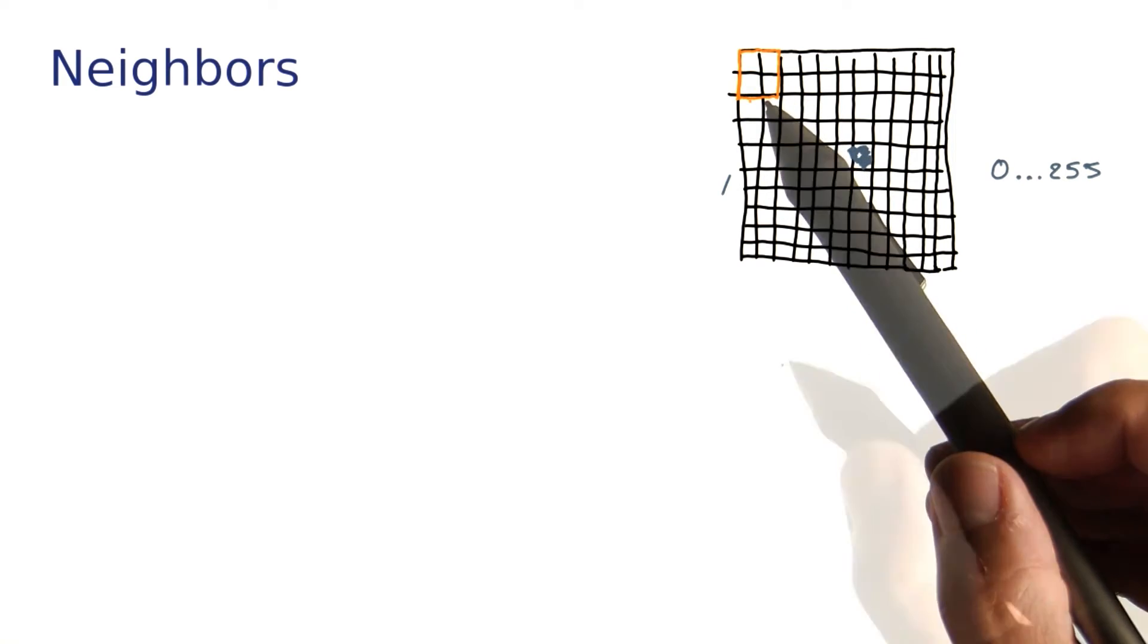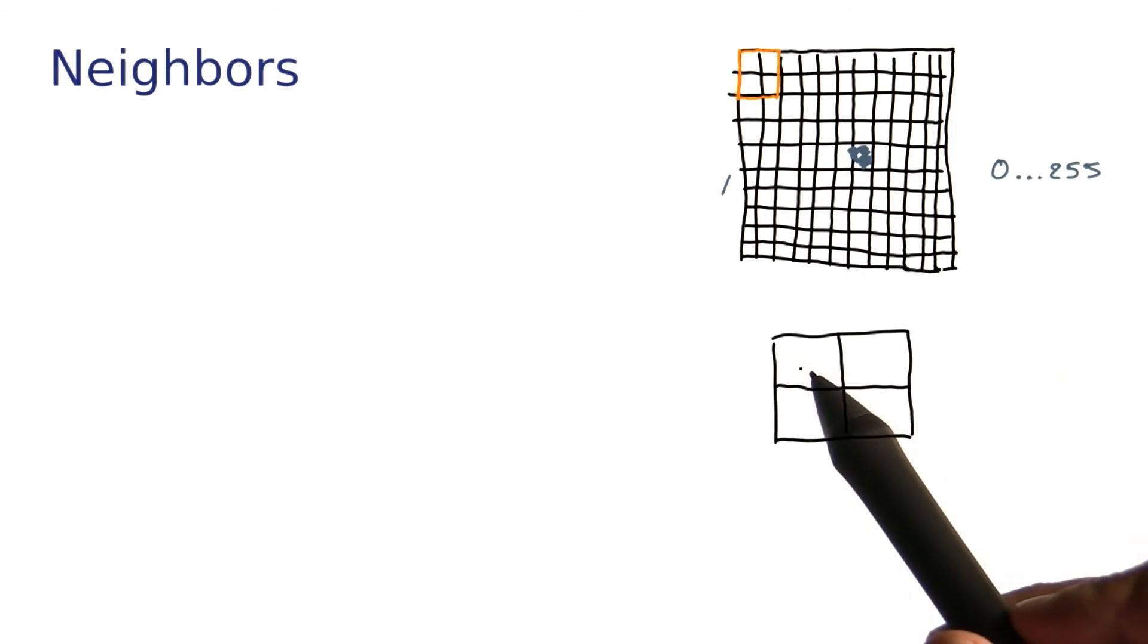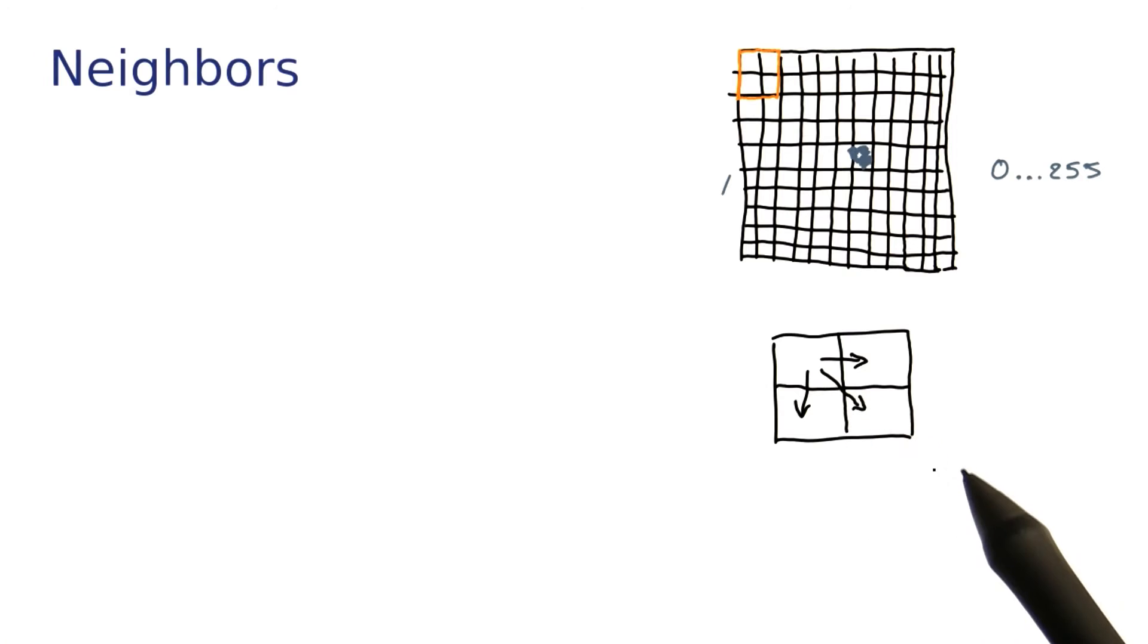In essence, I'm making every pixel a bit fatter. Let me blow this up a little. So here I have a pixel, and I want to know what are its three neighbors to the right, to the bottom, and diagonally.